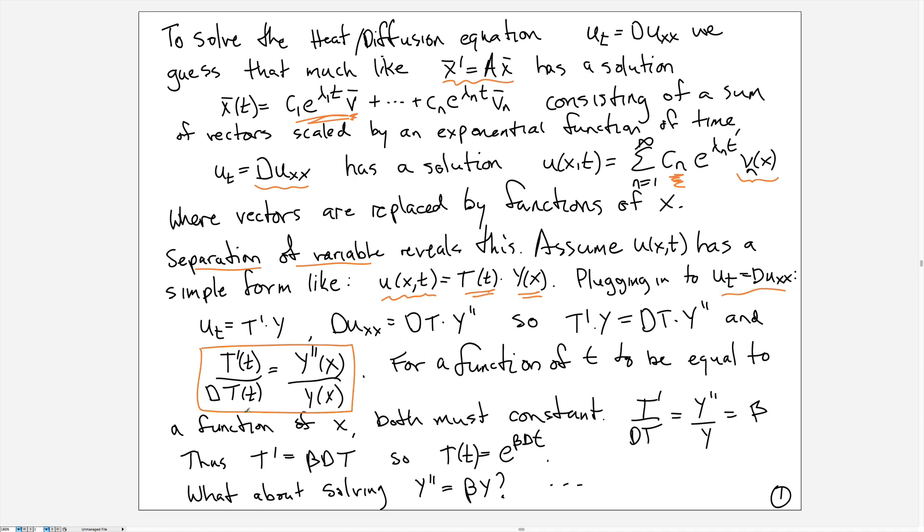This isn't a useful equation as is, but notice this side does not depend on x, and this side does not depend on t. If you have a function of t with no x and a function of x with no t that are equal, the only way that's possible is if they both equal some constant, which we'll call β. Now we can take this part equal to β and separately this part and equate it to β, getting two equations: one for t and another one for y.